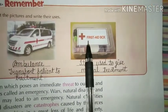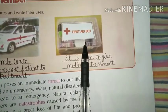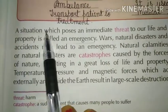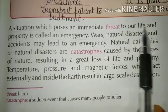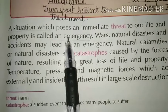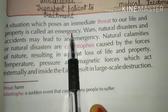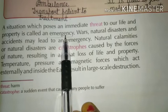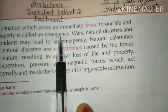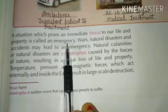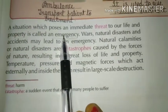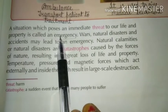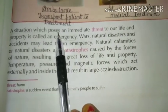The second picture is a first aid box. A first aid box provides immediate medical help. A situation which poses an immediate threat to our life and property is called an emergency. An emergency is a situation that poses an immediate threat to health, life, property, or environment — such a condition is called an emergency situation.